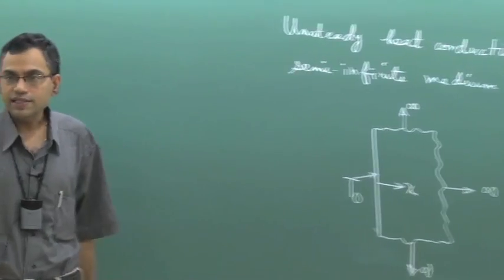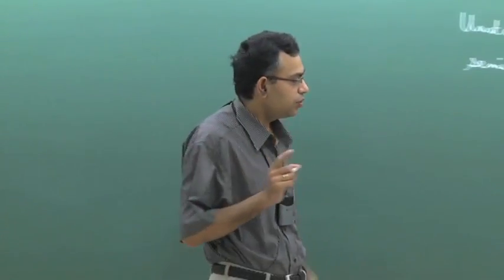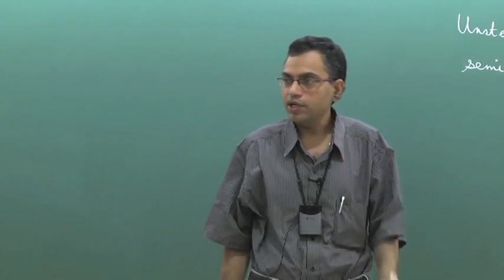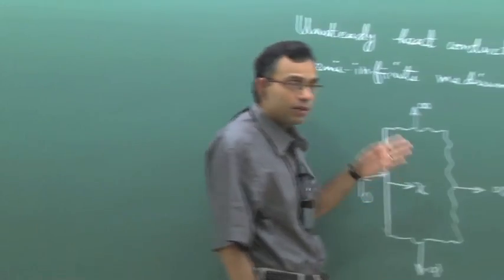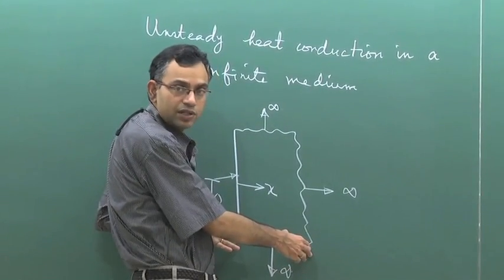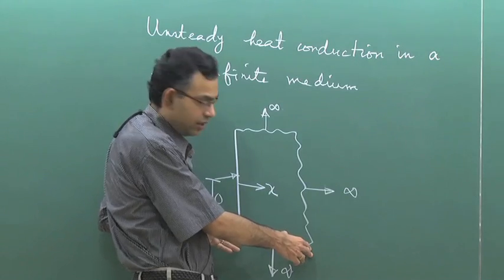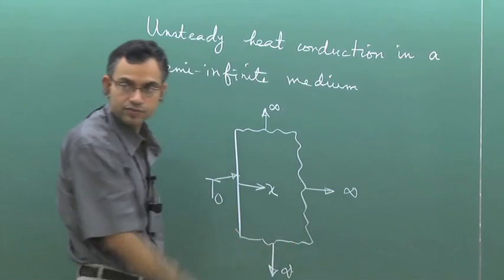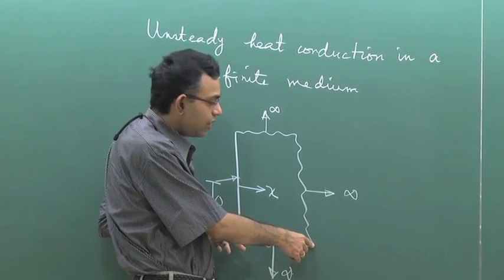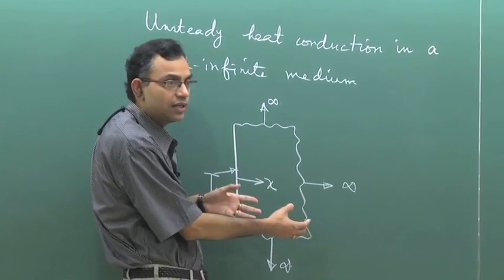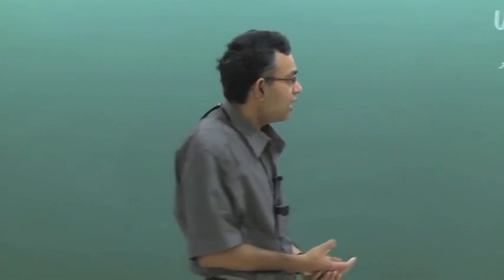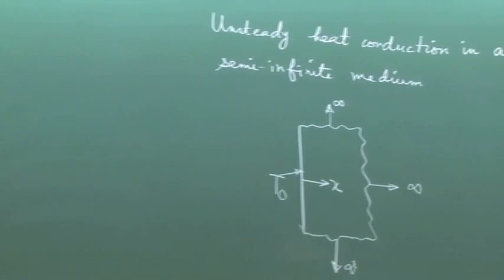The most important difference between this problem and the infinite plate problem is that here we have no fixed dimension L. For the infinite plate, the entire block was 2L and we had a fixed geometric scale. Here, we are not considering any fixed dimension, and the question is: what type of dimension can the claim of 'infinite' be valid for? To understand that, we do a scaling or order-of-magnitude analysis.